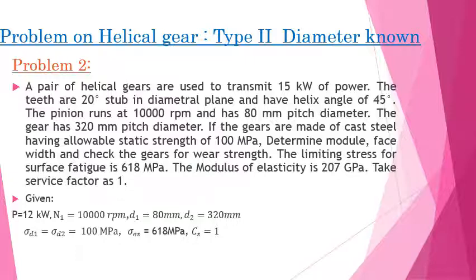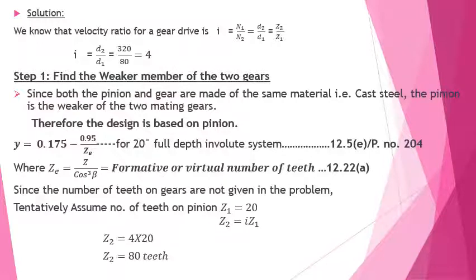Writing down the given data: the allowable static stress is the same for both pinion and gear, 100 MPa. The surface endurance strength is 618 MPa, modulus of elasticity E = 207 GPa, and service factor CS = 1. Since both diameters are given (D1 = 80 mm, D2 = 320 mm), the velocity ratio i = D2 / D1 = 320 / 80 = 4.